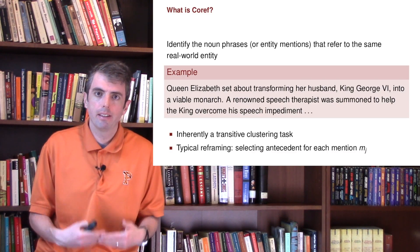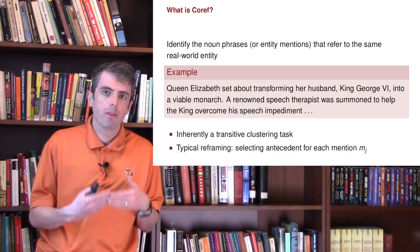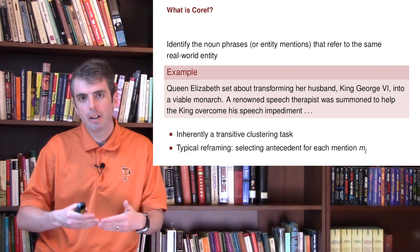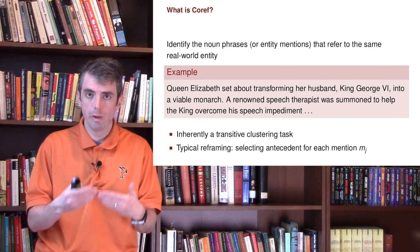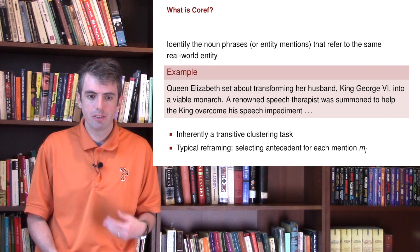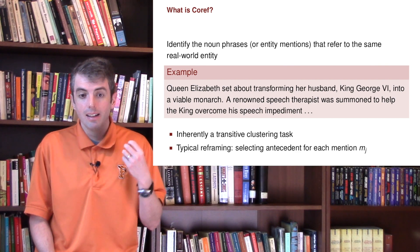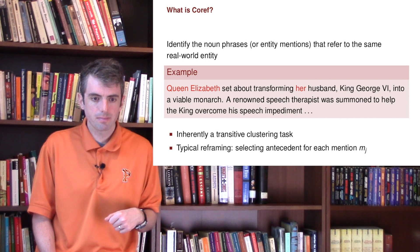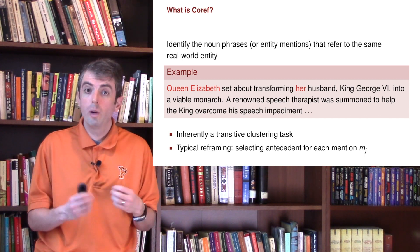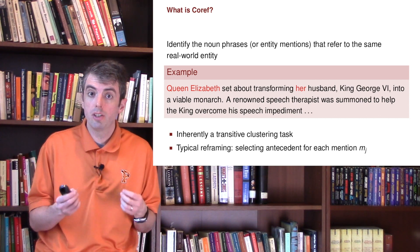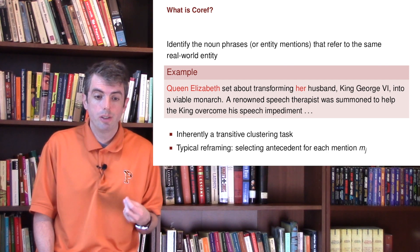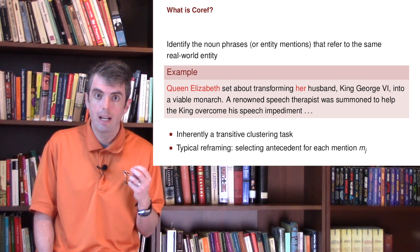Co-reference is a phenomenon where you can have multiple noun phrases referring to the same real-world entity. So let's say that you have a piece of text like the following. Queen Elizabeth is mentioned by name, but you also refer to Queen Elizabeth with the pronoun 'her'.